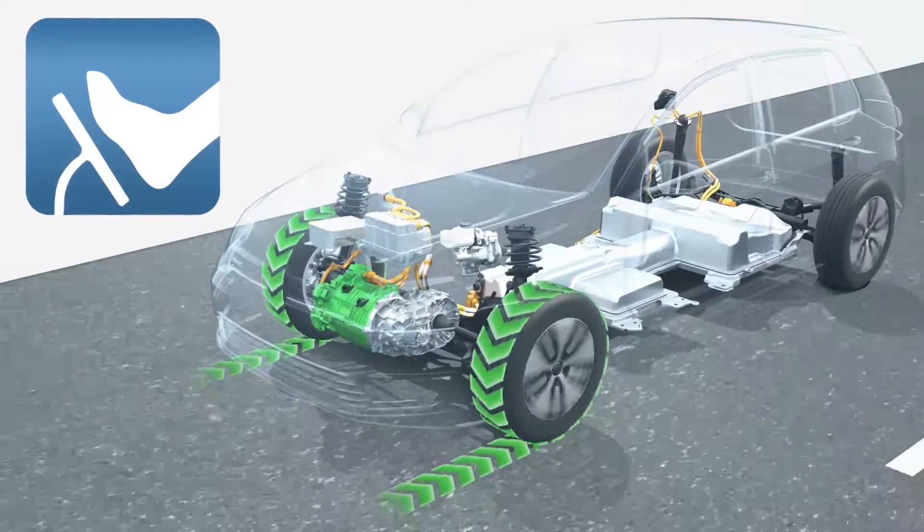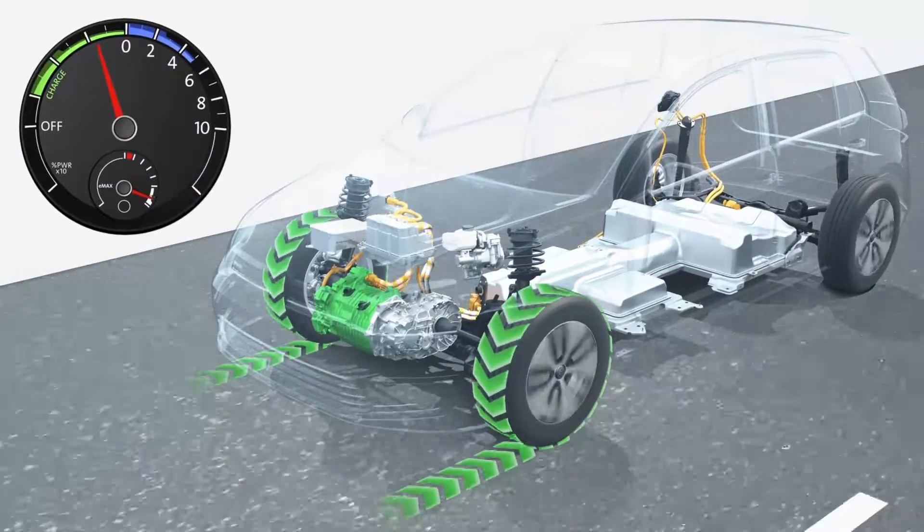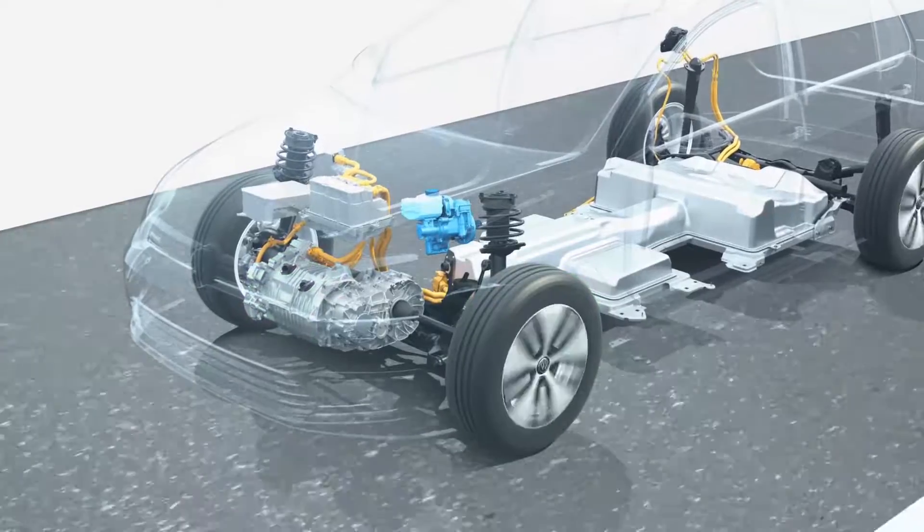In several levels, the driver can choose to what degree this happens. The cockpit informs the driver on how much electricity flows into the battery.